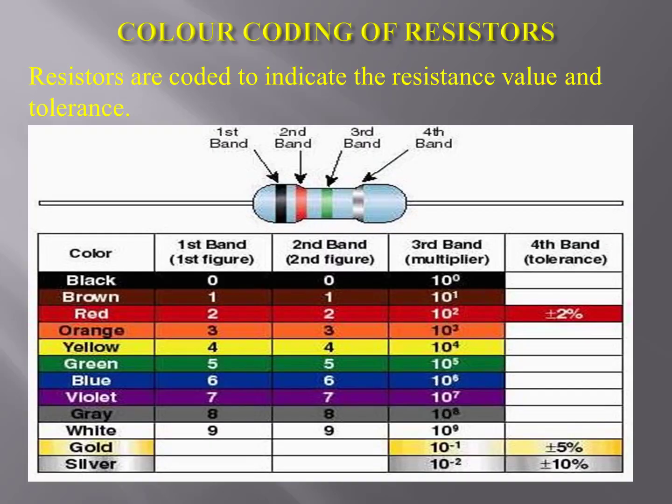Color coding of resistors: carbon composition resistors have color bands on them which are coded to indicate the resistance value and tolerance. I will now move to the whiteboard to discuss how we can find the value of a carbon composition resistor.